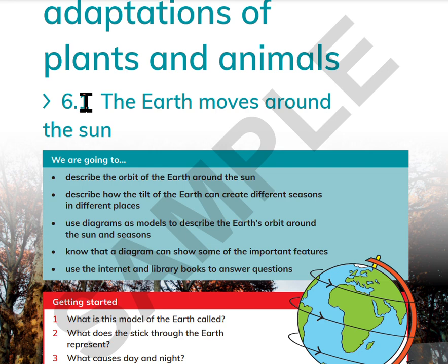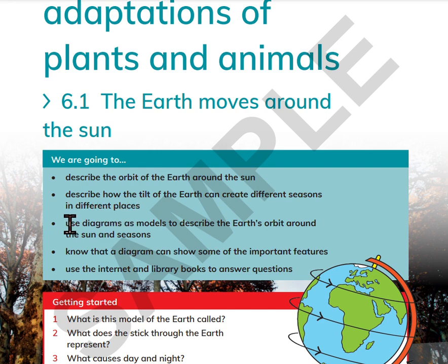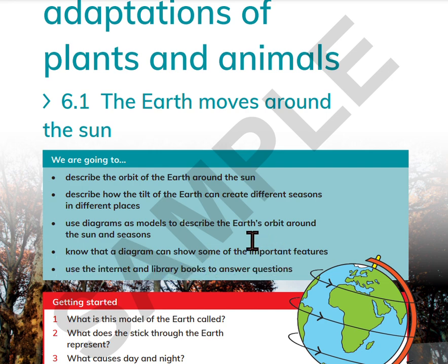Question 6.1: The Earth Moves Around the Sun. We are going to describe the orbit of the Earth around the Sun, describe how the tilt of the Earth can create different seasons in different places, use diagrams as models to describe the Earth's orbit around the Sun, know that a diagram can show some of the important features, and use the internet and library books to answer questions.